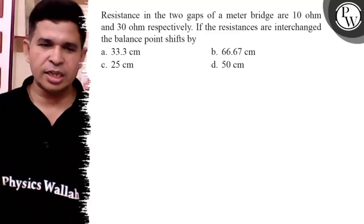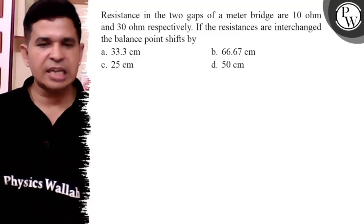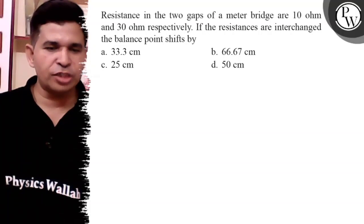Let us see this question. Resistance in two gaps of a meter bridge are 10 ohm and 30 ohm respectively. If the resistances are interchanged, then the balance point shifts by.